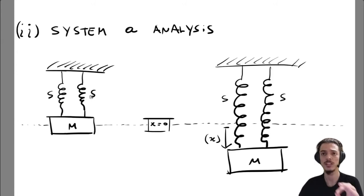In its equilibrium position where the springs are relaxed, okay. This position is x equals zero and we pull the system by a distance x.